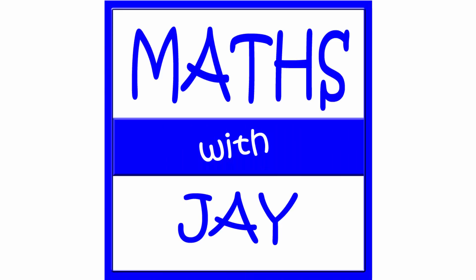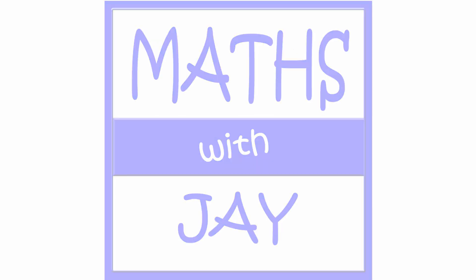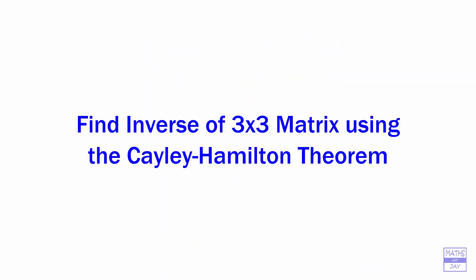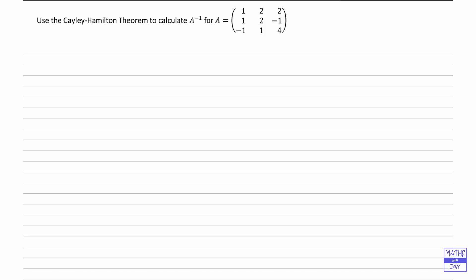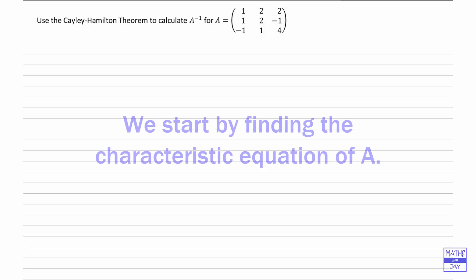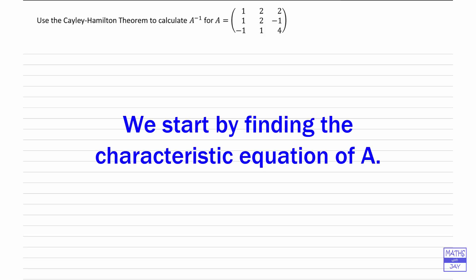Hello, welcome to Maths with Jay. Here we're going to be looking at finding the inverse of a matrix by a rather unusual method. Because we want to use the Cayley-Hamilton theorem, we'll start by writing down the equation that we'd normally use to find the eigenvalues of A — that's the characteristic equation.